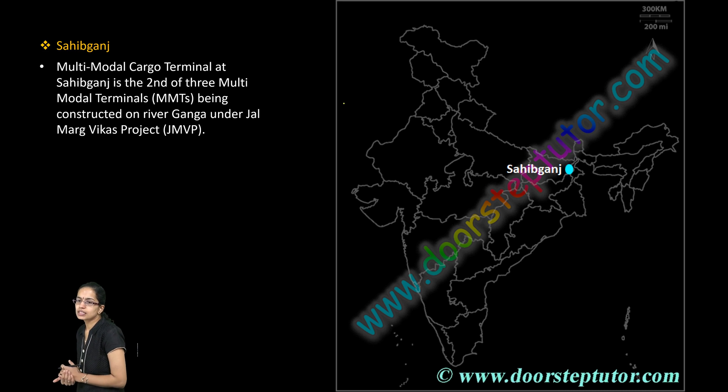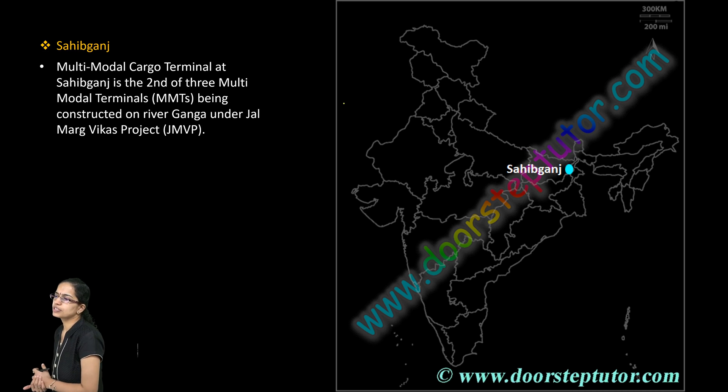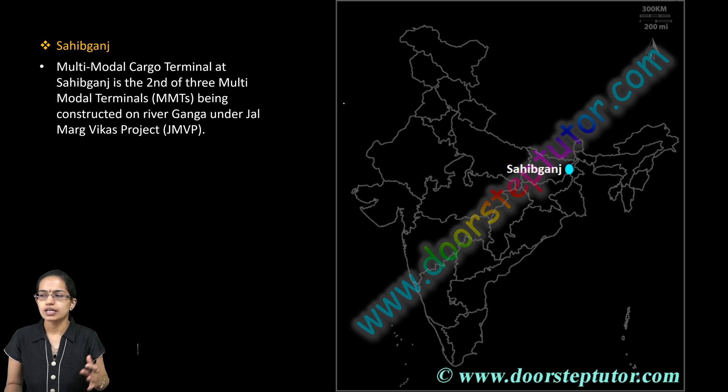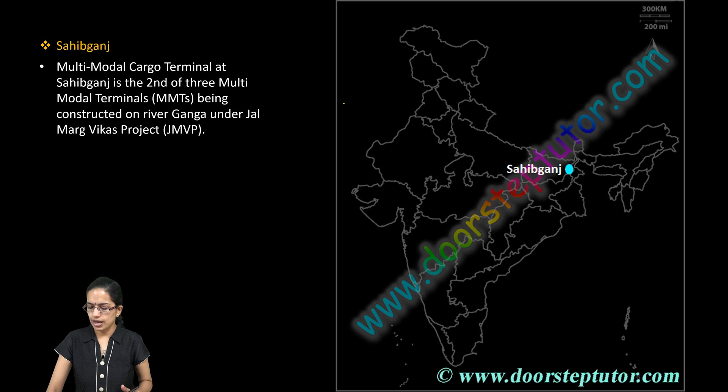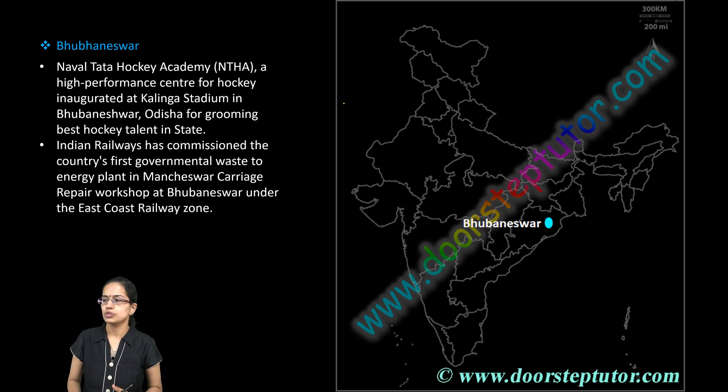The next is Sahib Kanj. At Sahib Kanj, a multimodal cargo terminal has been constructed under the Jal Marg Vikas Pariyojana.